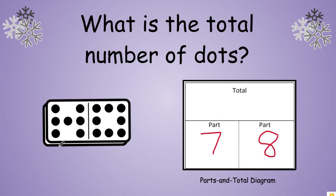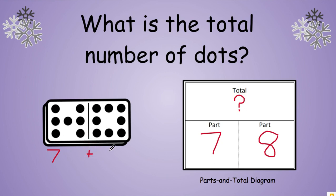Does it tell us immediately how many we have total? It doesn't, so we will put a question mark. Then let's write a number model — we'll start with our parts: seven plus eight equals question mark, because we don't have a total yet.